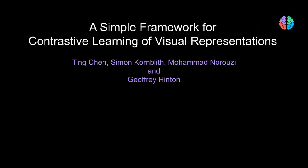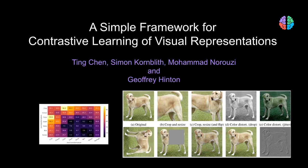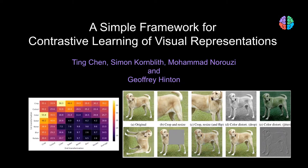Contrastive learning is a very active area of machine learning research. SimCLR is a high-impact work that eliminates specialized architectures and memory banks usually used in contrastive learning. It shows that strong augmentations of unlabeled training data with a standard ResNet architecture followed by a small neural network is all you need to beat state-of-the-art results.